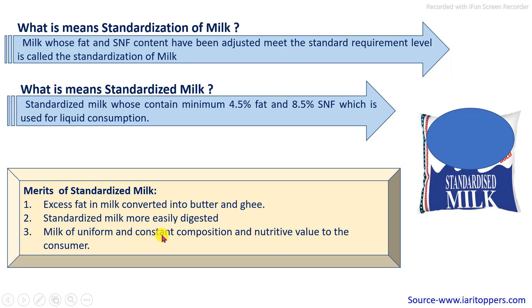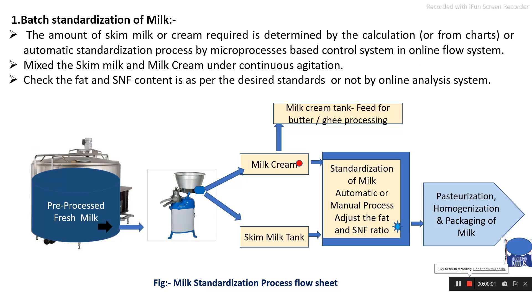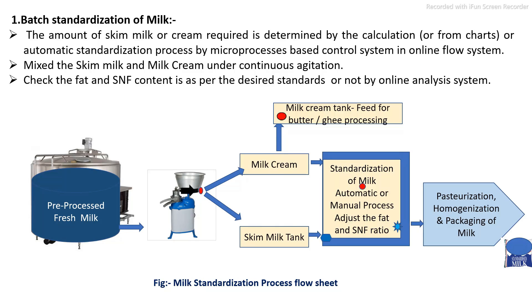Standardized milk provides uniform and constant composition with nutritive value to the consumer. The production process involves two methods: the first is the batch standardization process, and the second is the continuous inline automatic standardization process.